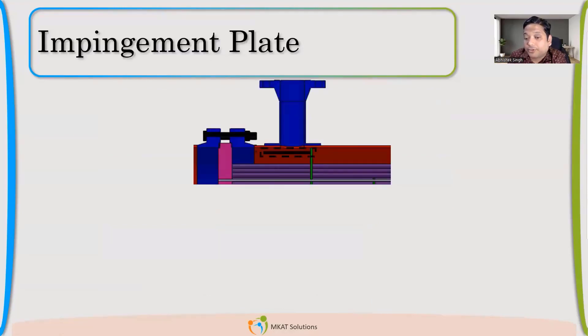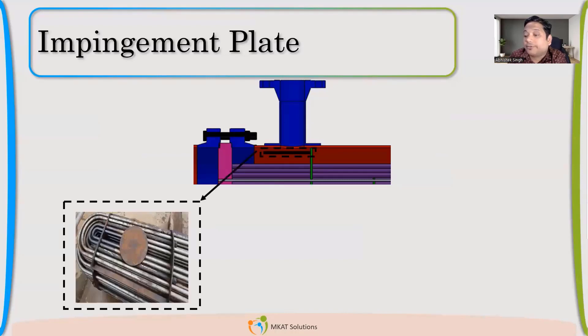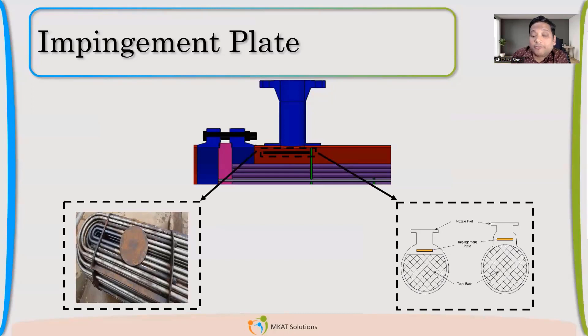Now impingement plate also we talked about. So there can be lots of different configuration for this impingement plate. One we can directly weld. With the help of tie rods. We typically don't weld on the tubes. So we used. If tie rods are outside. We can use them and. On the spacers. We can weld this. Or we can even weld on the baffles.